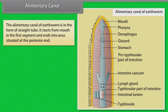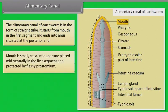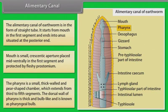The alimentary canal of earthworms is in the form of a straight tube. It starts from the mouth in the first segment and ends at the anus at the posterior end. The mouth is a small, crescentic aperture placed mid-ventrally in the first segment and protected by the fleshy prostomium. The pharynx is a small, thick-walled, pear-shaped chamber extending from the third to fifth segments. The dorsal wall of the pharynx is thick and bulb-like, known as the pharyngeal bulb.